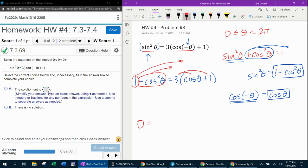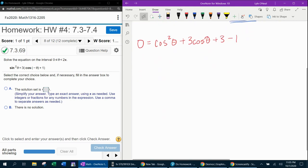Negative cosine squared theta when it comes over becomes positive cosine squared theta. And then when I distribute the three, three times cosine of theta makes a positive three cosine of theta. Three times one makes positive three. And remember that plus one coming over, that's going to make minus one.